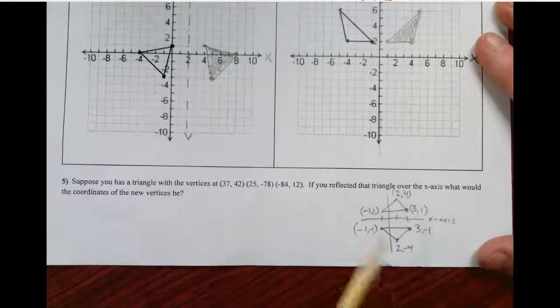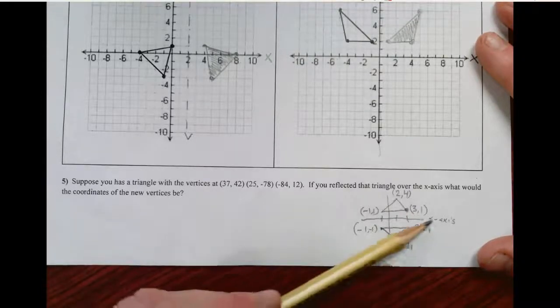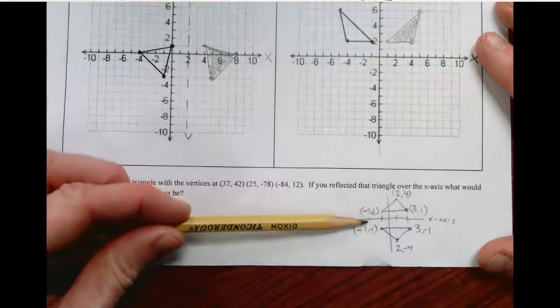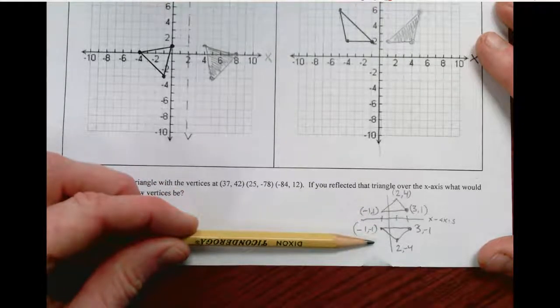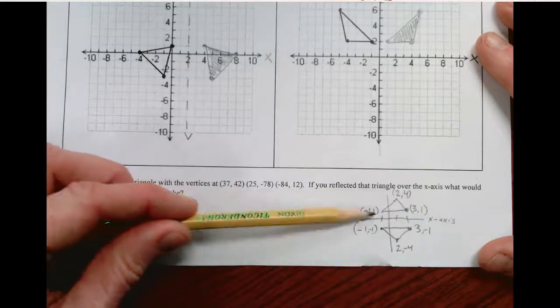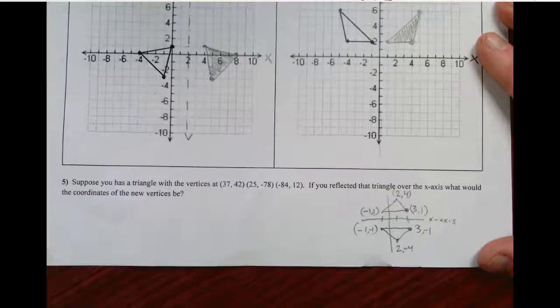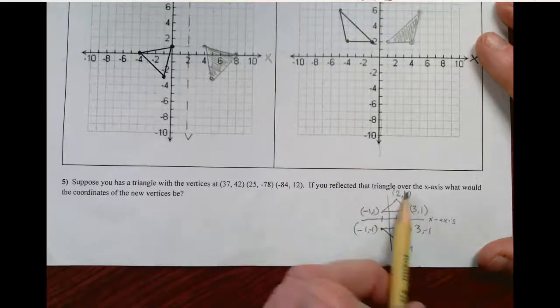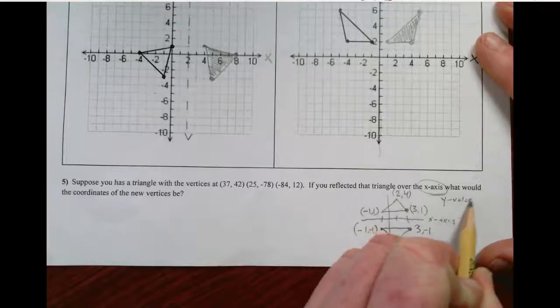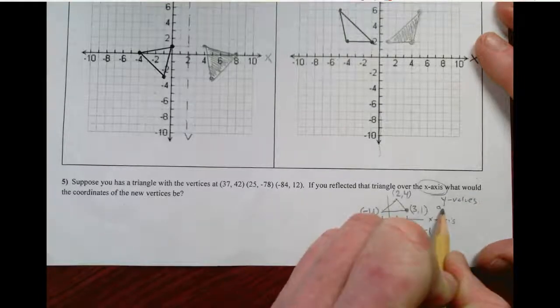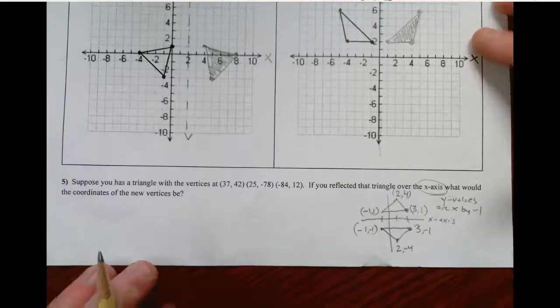That's just a real sketch just for me to kind of think about what happens to the values. When you flip over the x-axis, you go from here to here with this particular problem, which means that the y values change signs. Nothing happened to the x values. Just the y values change signs. So when you flip over the x-axis, the y values are multiplied by negative 1.